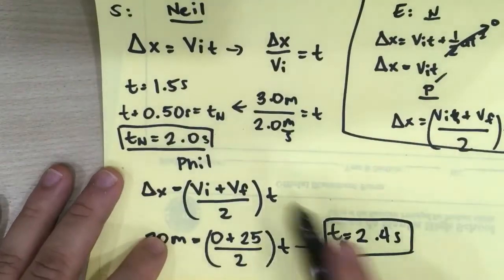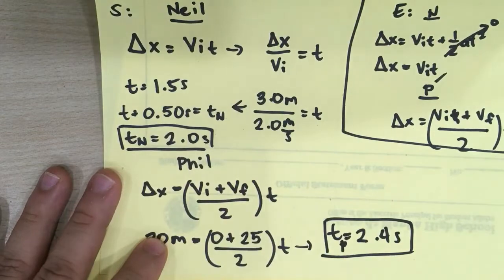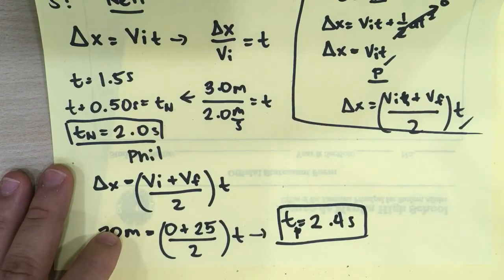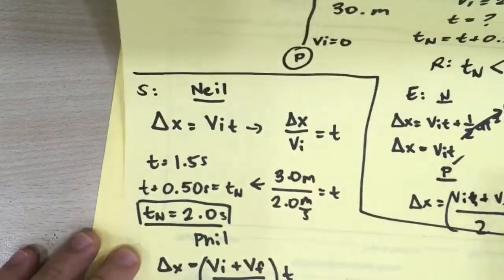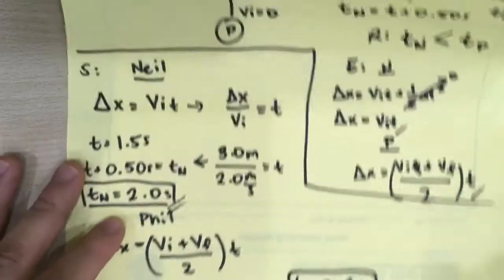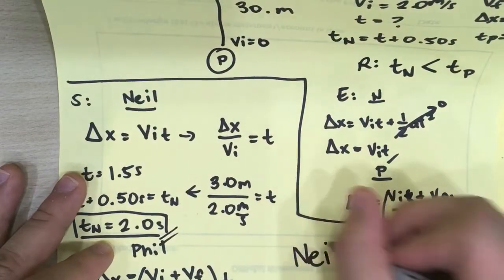Now let's check. The goalkeeper gets there in 2 seconds. The ball struck by Phil gets there in 2.4 seconds. So who is faster in this case? Well, it's obvious that the goalkeeper wins because it's much slower. Therefore, final answer, Neil saves the shot.